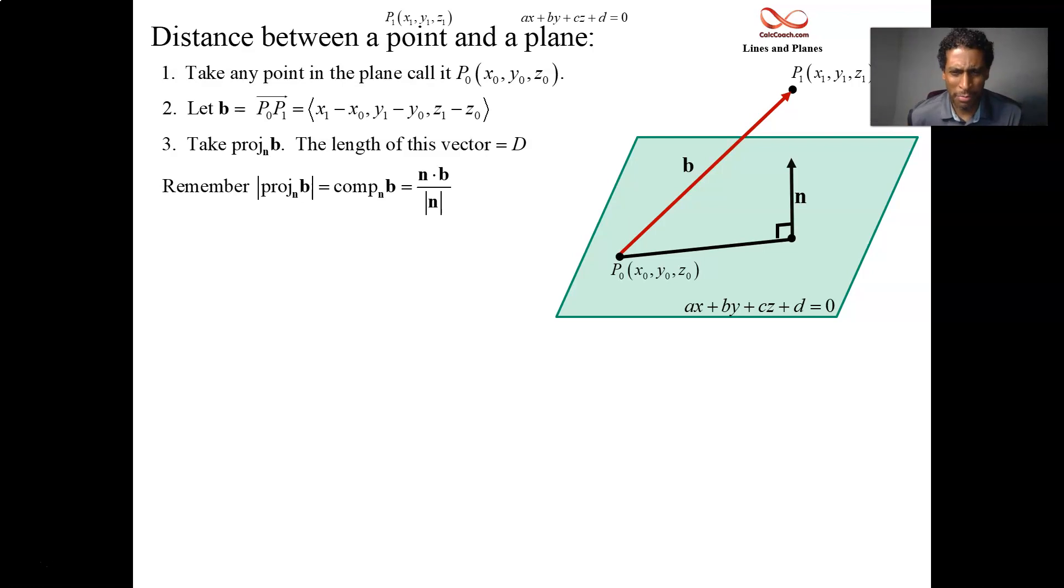Remember how we have the component of B onto N? It's just a dot product between the two divided by the magnitude of the vector you're projecting onto. We find that and we have exactly what we need. The projection vector is in blue and how long it is is our answer to the distance.